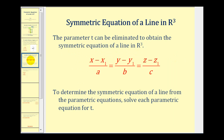There's one more form of a linear equation we should mention for R3. The parameter t can be eliminated to obtain what's called the symmetric equation of a line in R3. To obtain this, we solve each parametric equation for t and then set them all equal to each other.